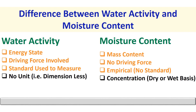Fourth, water activity has no unit — that is, it is a dimensionless number — whereas moisture content is presented with a unit in concentration, either on a weight basis or dry basis. I am going to explain both definitions later.